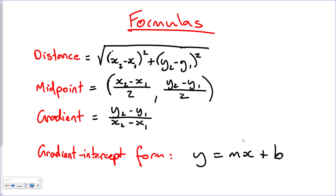In this video we're going to go through a few questions based on linear relationships in preparation for the Year 10 test. I've got these formulas on at the moment — the distance formula, midpoint formula, gradient formula, and the gradient-intercept formula for finding the equation of a line. These are actually 5.3 formulas, so if you're doing 5.2 you don't really need to know them, but they make things quicker. Anyway, let's get into it.